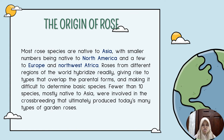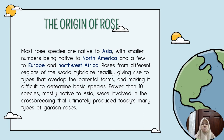The origin of roses. Most rose species are native to Asia, with a smaller number being native to North America and a few to Europe and Northwest Africa. Roses from different regions of the world crossbreed readily, giving rise to types that overlap the parental form and making it difficult to determine the basic species. Fewer than ten species, mostly native to Asia, were involved in the crossbreeding that ultimately produced today's many types of garden roses.